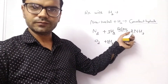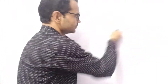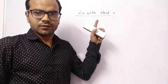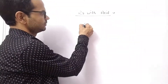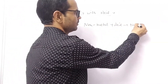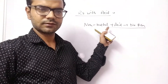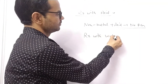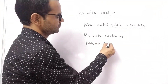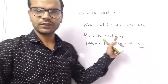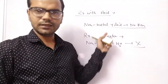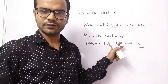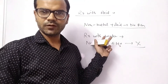Next is the reaction with acid. Non-metals never react with acid — non-metal plus acid gives no reaction. Non-metals are inert to acid. Similarly, reaction with water also gives no reaction. So what we have learned is that non-metals are inert to both acid and water — there will be no chemical interaction between a non-metal and acid or water.